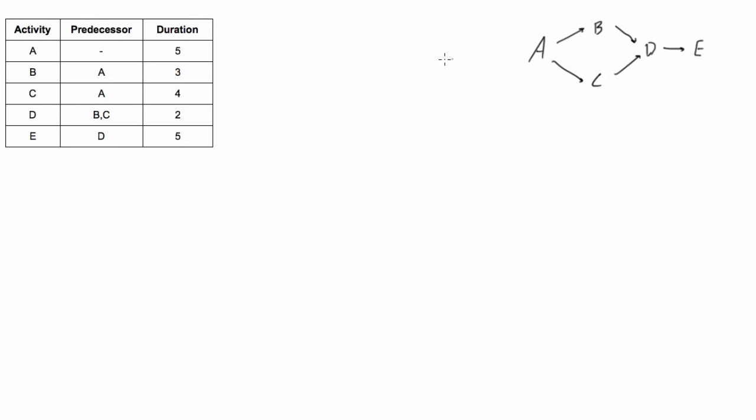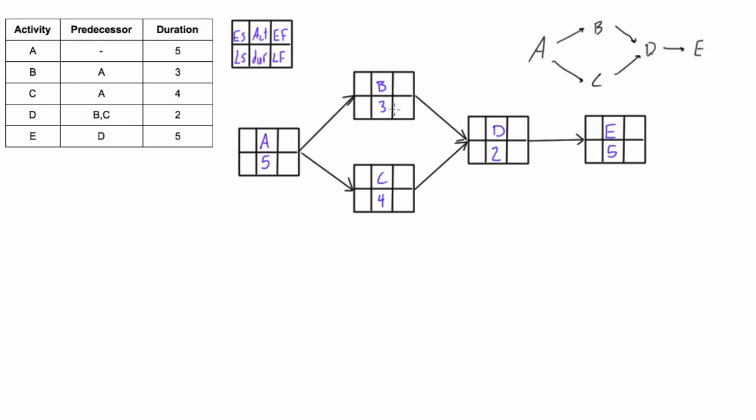So let's redraw this with our good copy of our PDM network diagram. So here we have our good copy where we're using this notation. The top middle we have the activity name, the bottom middle square we have the duration. So that's what I've already filled in here. We have activities A, B, C, D, E, and then in the bottom middle we have the durations that I read right off of this table here. So we'd have A as five days, B is three days and so on.